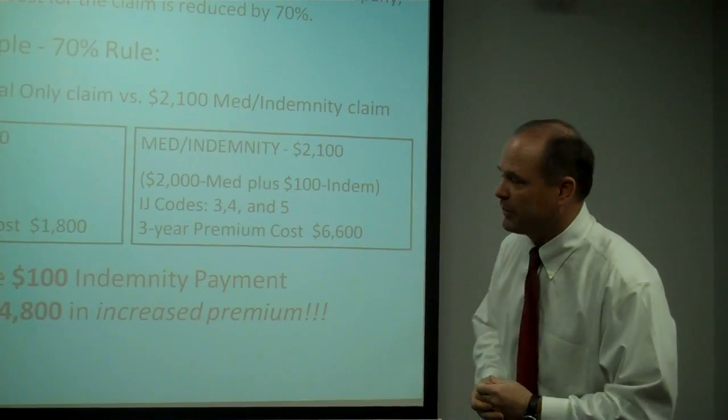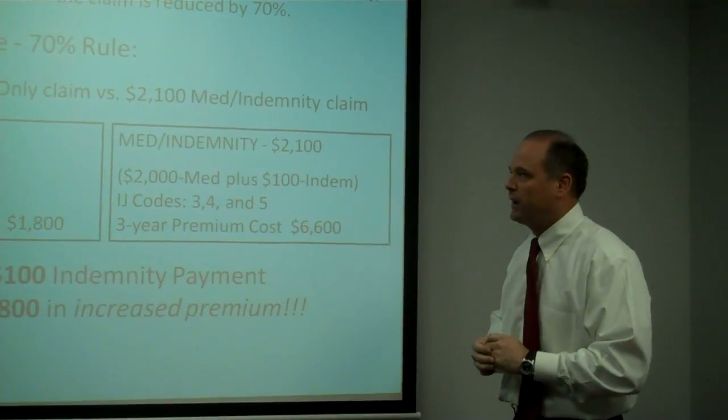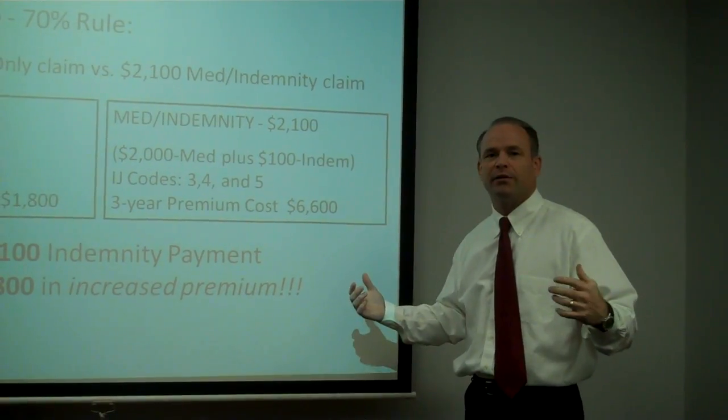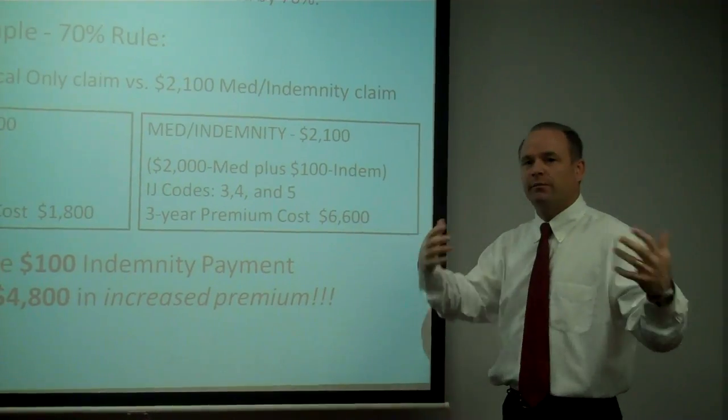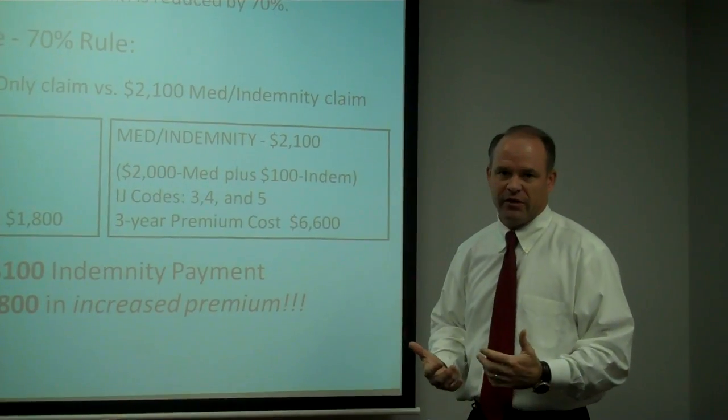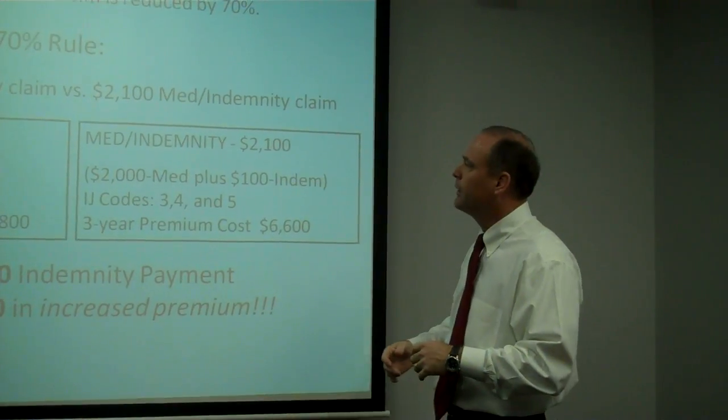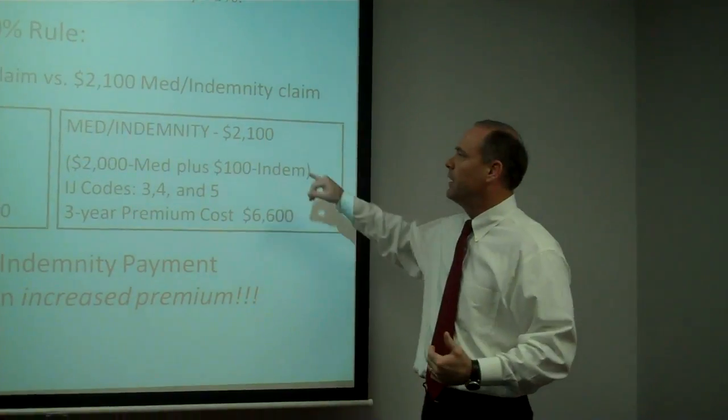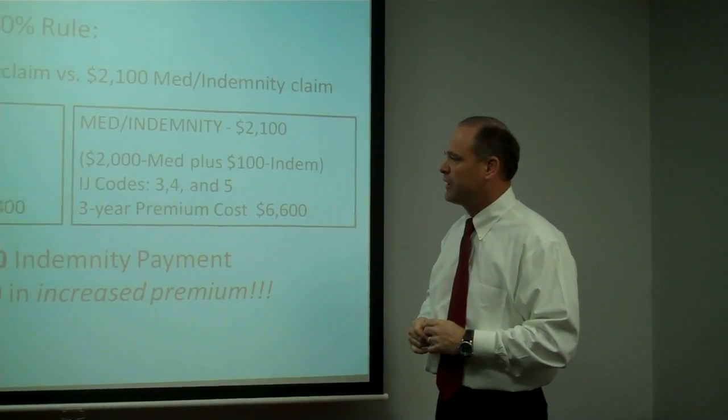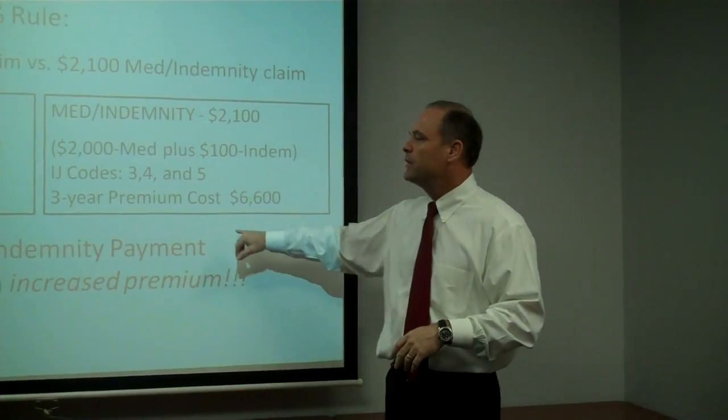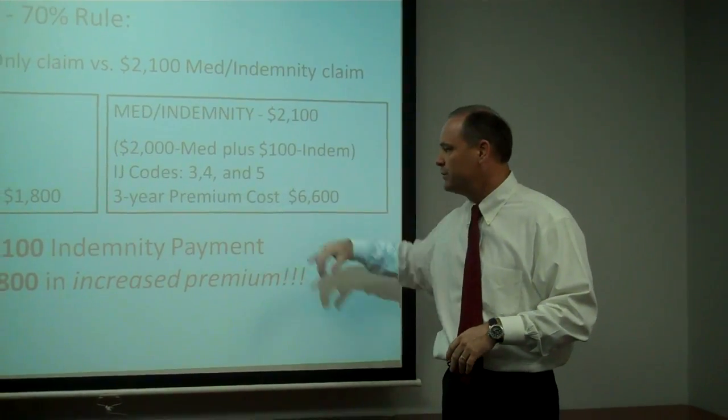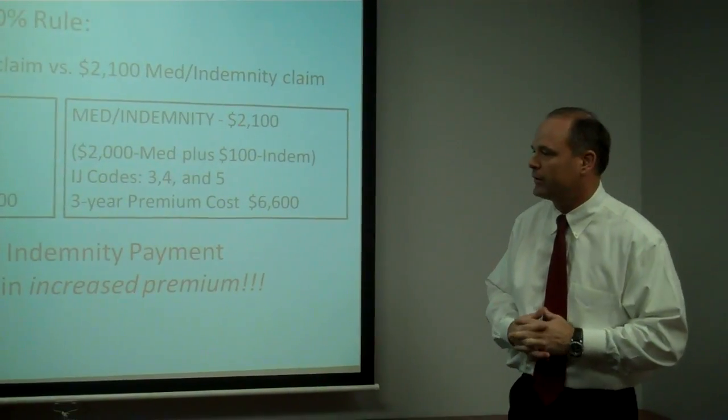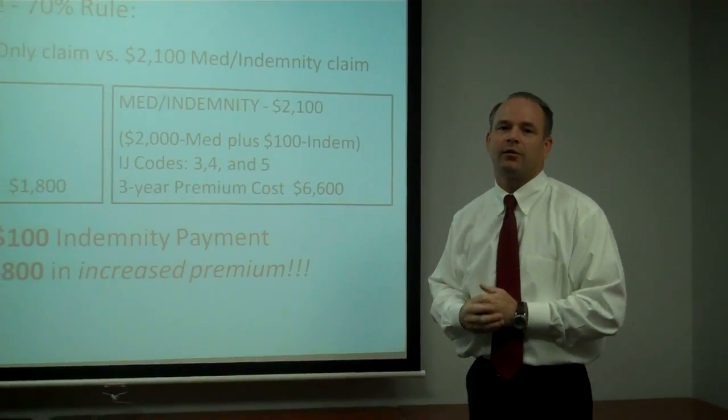We then took that claim and added $100 of lost wages onto that claim. When we see claims like this, this happens. This is not as infrequent as you might think. So we had $2,000 in medical bills, $100 of lost wages. Now we lose the medical only status. It is coded something other than IJ6, probably IJ5 or IJ4, which includes indemnity, which is the lost wages in this particular case. And the three year premium cost now, because of that $100 on lost wages, jumps to $6,600 for a difference of $4,800.